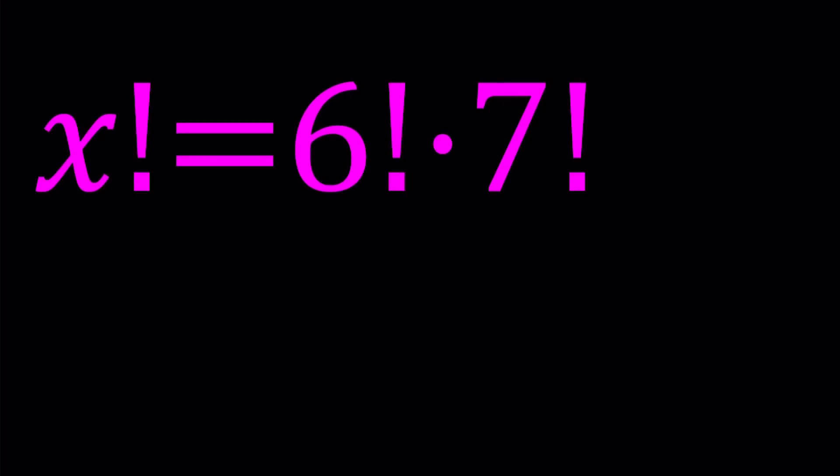Hello everyone. In this video, we're going to be solving an interesting factorial equation. We have x factorial equals 6 factorial times 7 factorial. In this case, x is a positive integer, but we're also going to look at something for which x is not integer.